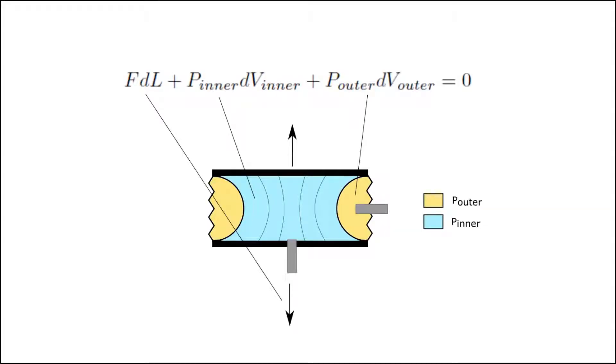We use the principle of virtual work to develop a model relating the input pressures to the actuator to the resulting force and stiffness. We imagine a virtual axial displacement and equate to zero the sum of the work done by the two pressure chambers and the work done by the axial force.